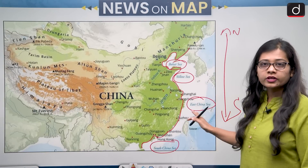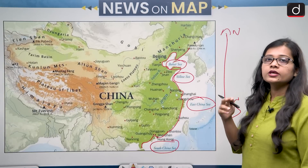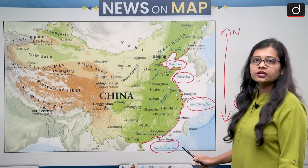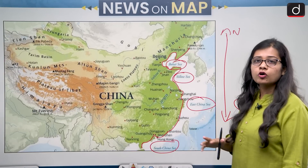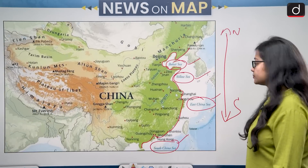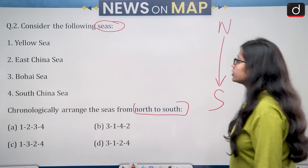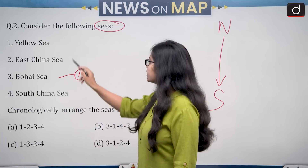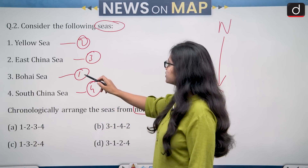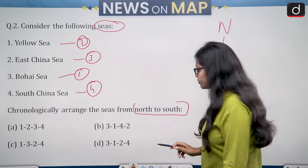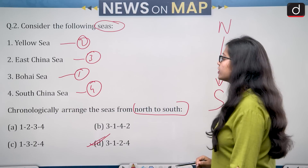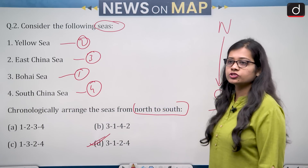Even if you don't know the northernmost sea, you can use common sense to determine East China Sea lies above South China Sea. The correct order from north to south is: Bohai Sea, Yellow Sea, East China Sea, South China Sea — which corresponds to the sequence 3-1-2-4. Looking at the options, option D is 3-1-2-4, so the correct answer is option D.